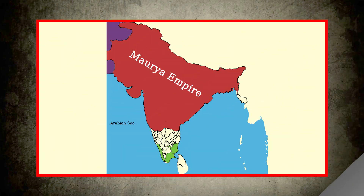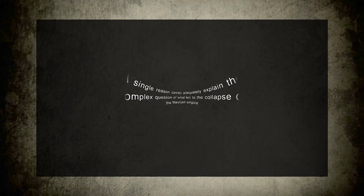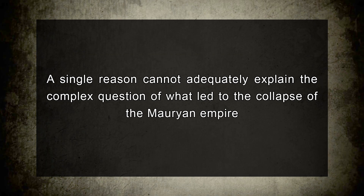The Mauryans were successful in establishing the first Pan-Indian Empire. However, this empire was subjected to fall sometime around 180 BC. A single reason cannot adequately explain the complex question of what led to the collapse of the Mauryan Empire. Combinations of causes led to the collapse.